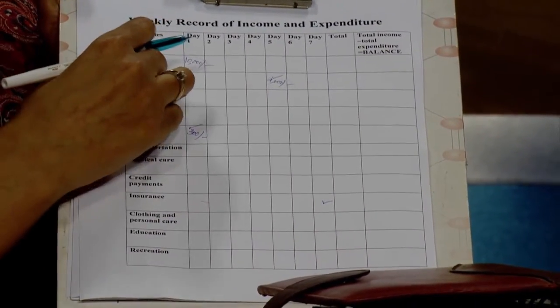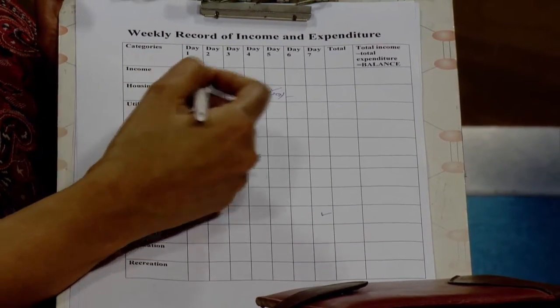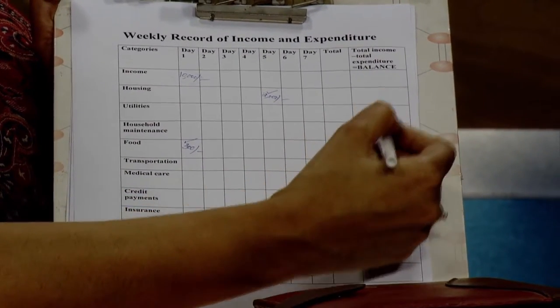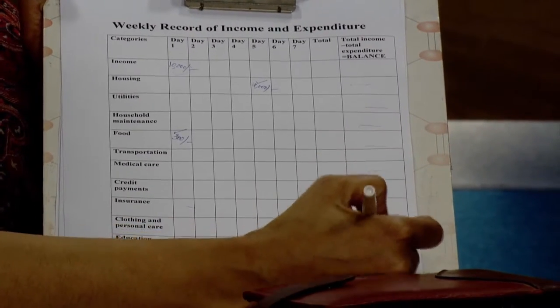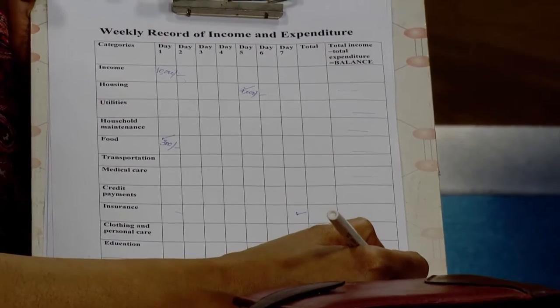The last column is finding out the balance, which is total income minus total expenditure. We have a limited income but expenditures can be unlimited, so you total up all categories, subtract total expenditure from total income, and get the balance. At times your expenditure may be more than your income — in that case you need to check where you are overspending and cut down on those.